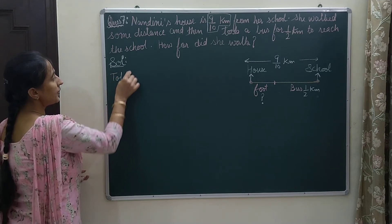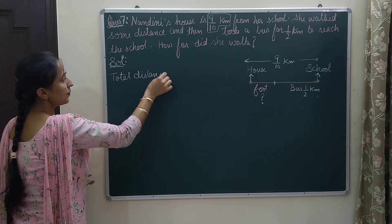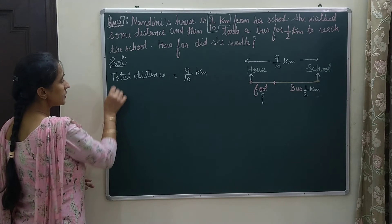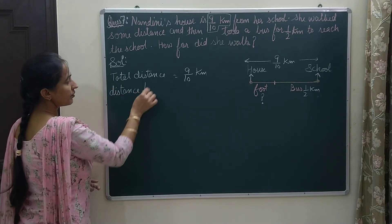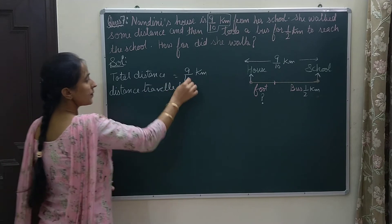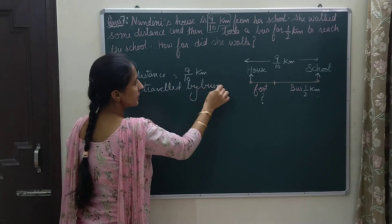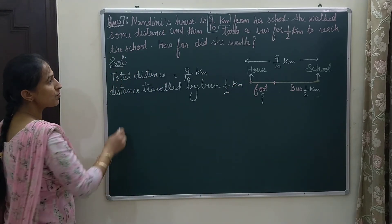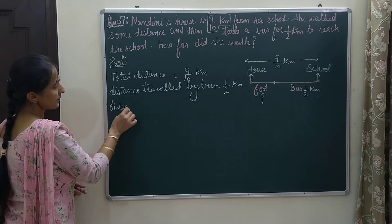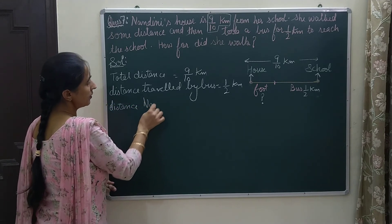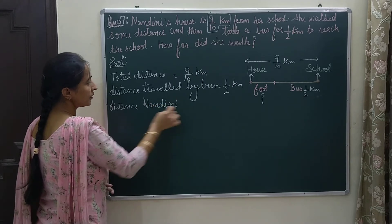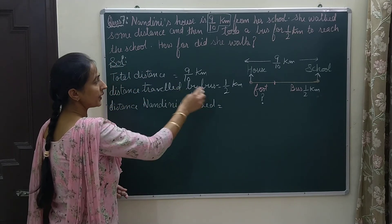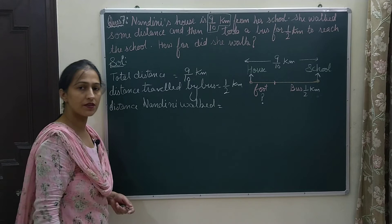Let us start the question. We write: total distance between house and school is 9 by 10 kilometers. Distance traveled by bus is 1 by 2 kilometers. Now we need to find how much distance Nandini walked, and for that we will subtract the bus distance from the total distance.